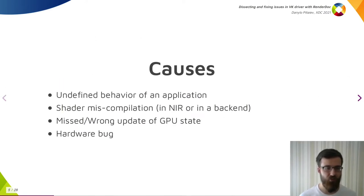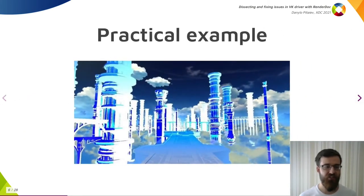The cause for the issues could also be categorized. Undefined behavior of an application is usually found with validation layers, or by inspecting a single frame, or of course across several frames. Shader miscompilation is also likely to be found by inspecting the frame. On the other hand, missed or wrong updates of the GPU state could be harder to find. And hardware bugs are all over the place. Later I'll talk about different tips to how to debug different issues.